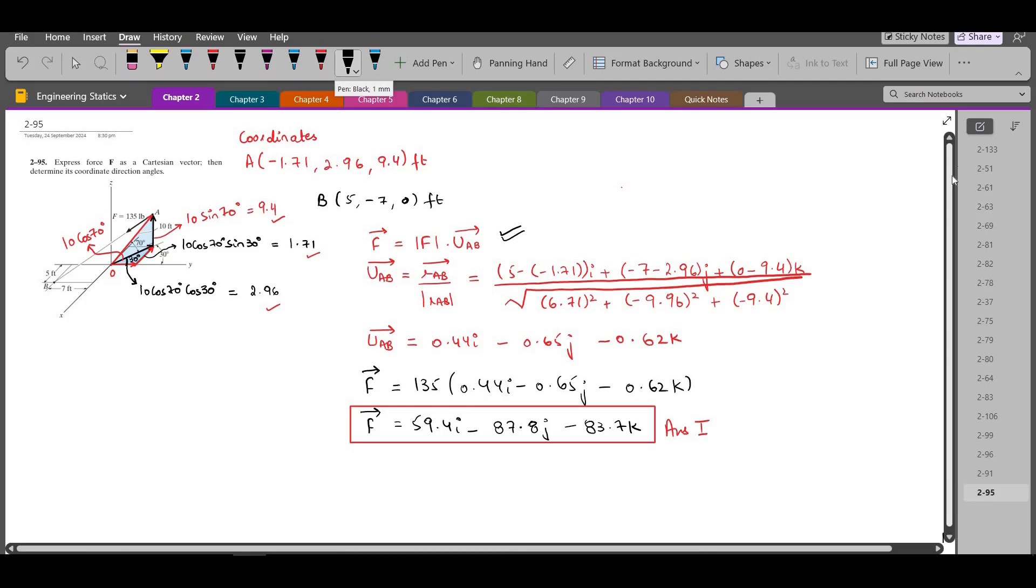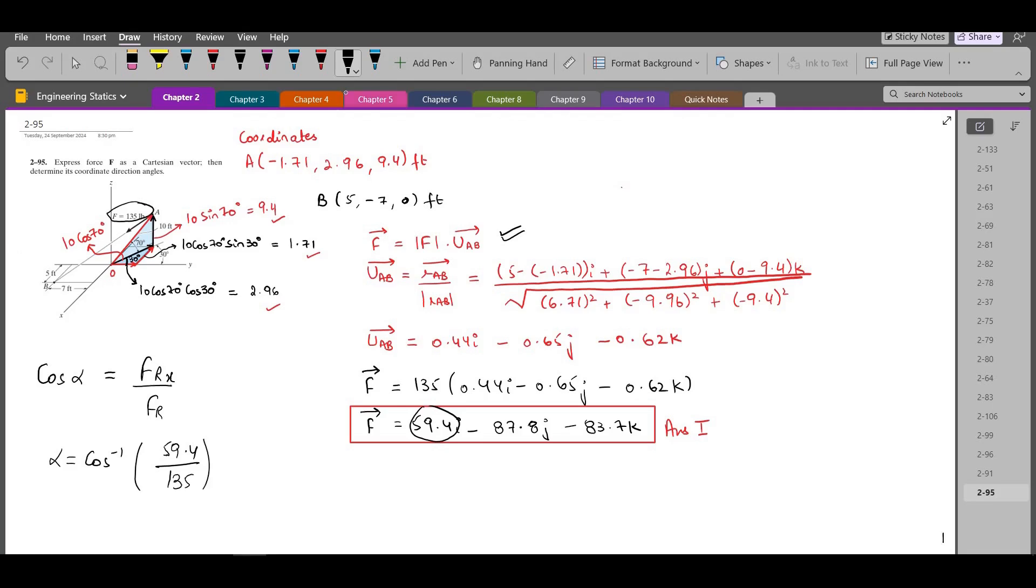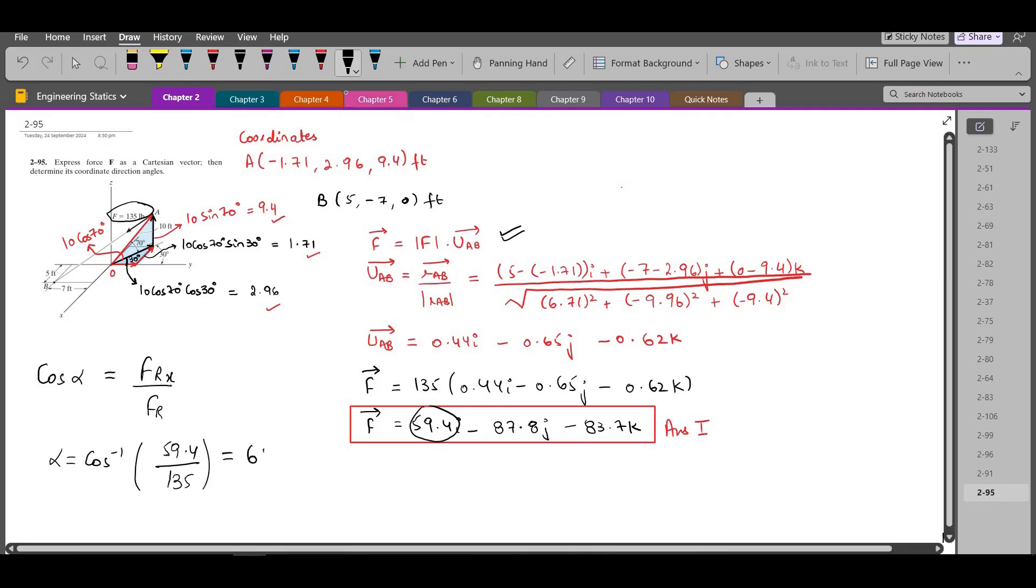Now for the coordinate direction angles. We have to find the cos alpha which is equals to FRx over FR. Alpha is equals to cos inverse of FRx which is 59.4 divided by the value of FR, the magnitude of FR basically which is 135 lb. So alpha comes out to be 63.9 degrees. Now we have to repeat the same procedure to find the values of beta and gamma.